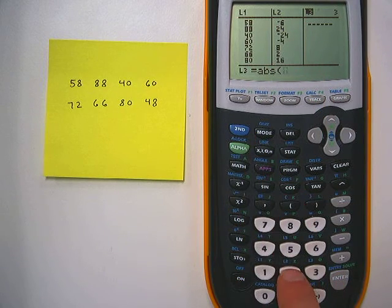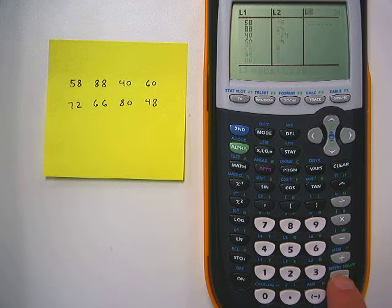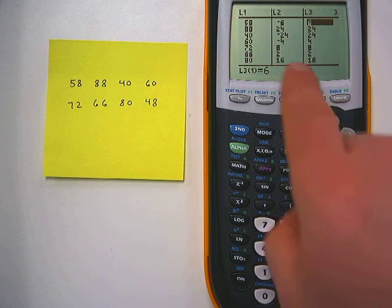Hit enter and we want the absolute value of list 2. So hit 2nd and the 2 key because above it it says L2 in blue. Close it and hit enter.